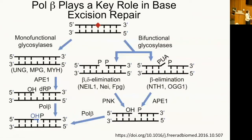Bifunctional glycosylases remove both the base and cut the backbone, leaving awful DNA ends that need to be remodeled. And again, all roads lead to DNA polymerase beta.